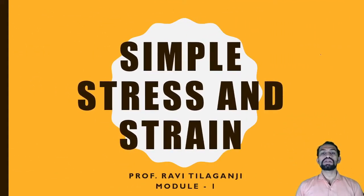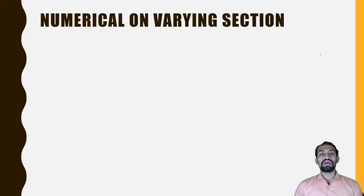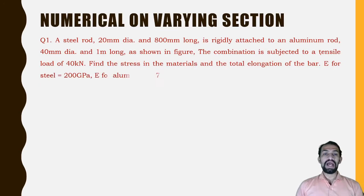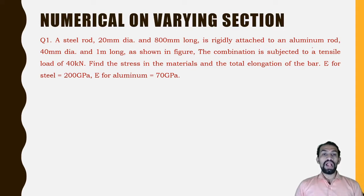Welcome to Simple Stress and Strain, Professor Ravi, Module Number One. This is a continuation of the last video on varying sections, where numerical problems will be solved. These problems are from previous old examination papers. The first problem: a steel rod of 20 mm diameter and 800 mm long is rigidly attached to an aluminium rod of 40 mm diameter and 4 meters long, as shown in the figure.